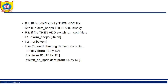Let us see a forward chaining example with three rules. R1: if hot and smoky, then fire. R2: if alarm beeps, then smoky. R3: if fire, then switch on sprinklers. Here, hot and smoky is a pattern, fire is the action; alarm beeps is a pattern, smoky is the action; fire is a pattern, and switch on sprinklers is the action.